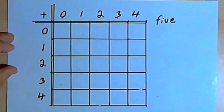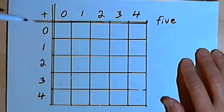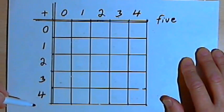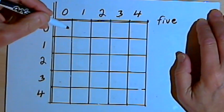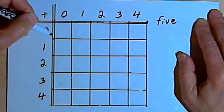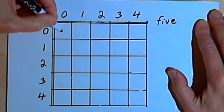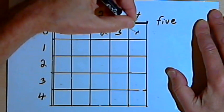And then we'll fill in this grid with the numbers we get when we add the numbers in the row, in the top, with the numbers that go down the side. So the first thing we have to do is add 0 to everything. Well, adding 0 to a number doesn't change it. So for this first row across, all I have to do is write 0, 1, 2, 3, and 4.